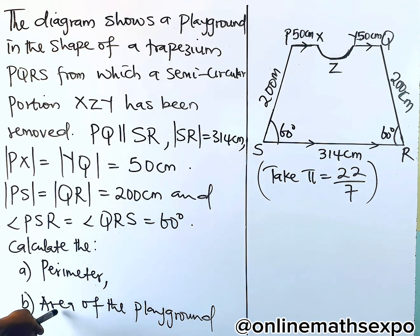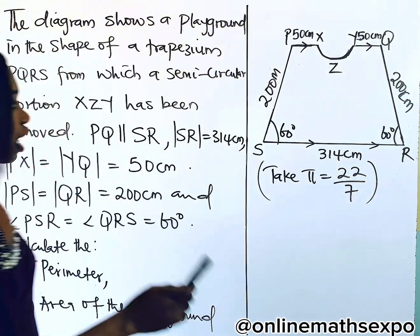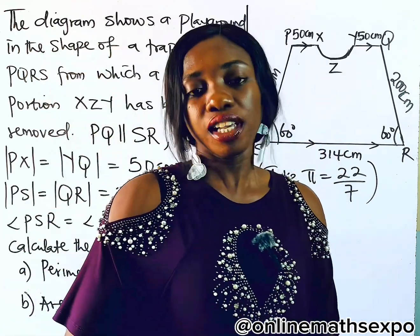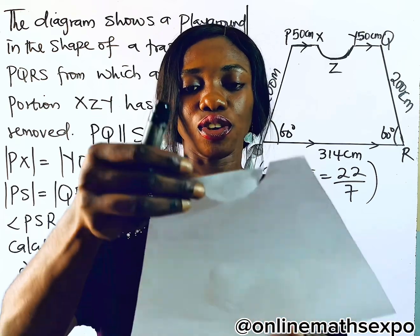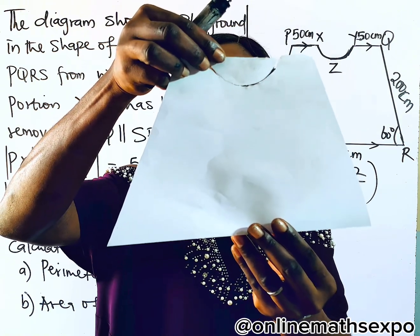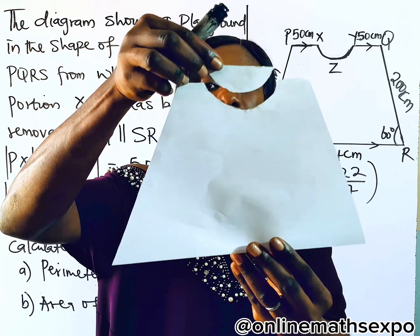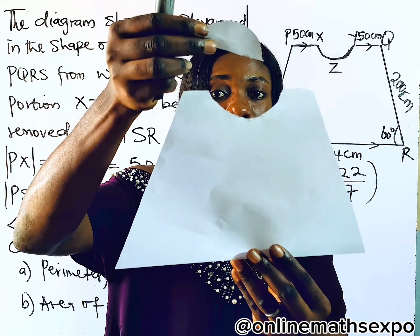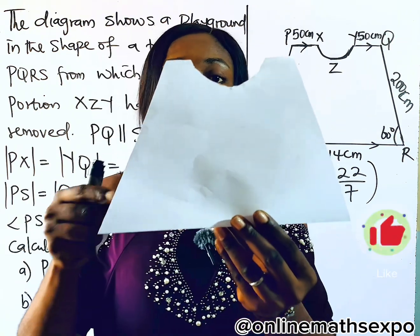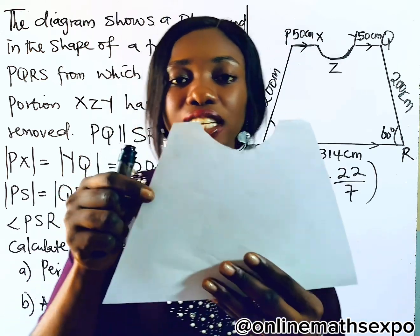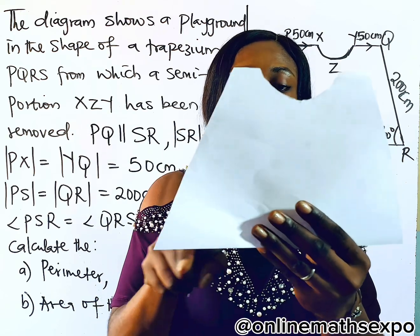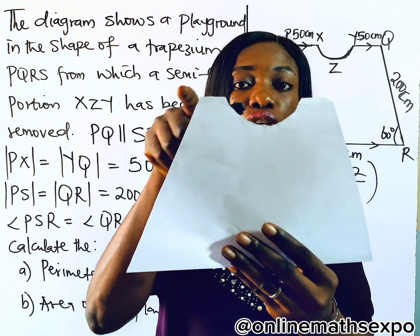Now the question says: calculate the perimeter and the area of this particular playground. Before we answer, I'm going to give you a little demonstration of what this looks like. This is your playground — a trapezium. This is your complete trapezium or trapezoid. But a semicircular part was taken off from this particular shape. This is the new playground. Perimeter simply means finding the distance around this particular shape.